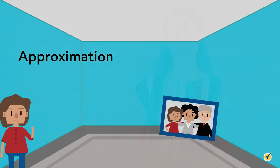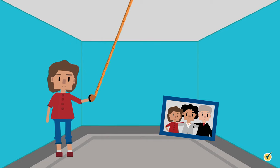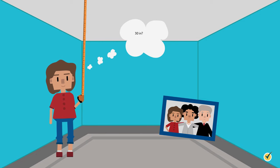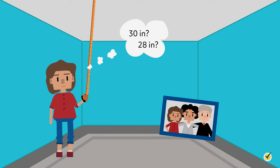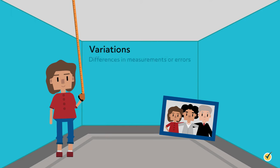Whenever a quantity is being measured, there are some approximations occurring. For instance, let's say you need to measure the length of a wall with a tape measure before hanging a picture frame. To make sure you have the exact length, it's best to measure the space more than once. When measuring something more than once, it's possible to have different results. Even though you use the same tool — a tape measure — and are measuring the same space — the wall — differences in measurement can occur. These differences are called variations, or errors.